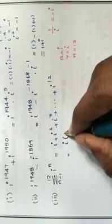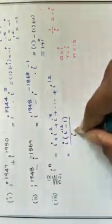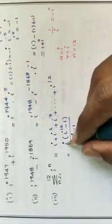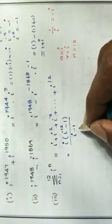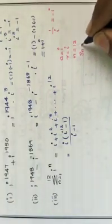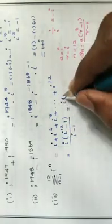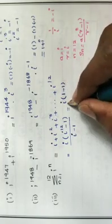Using the GP sum formula, Sn equals a times (r to the power n minus 1) divided by (r minus 1). So that is i times (i to the power 12 minus 1) divided by (i minus 1). Since i to the power 12 is a multiple of 4, its value is 1. So 1 minus 1 equals 0, and 0 divided by anything is 0.